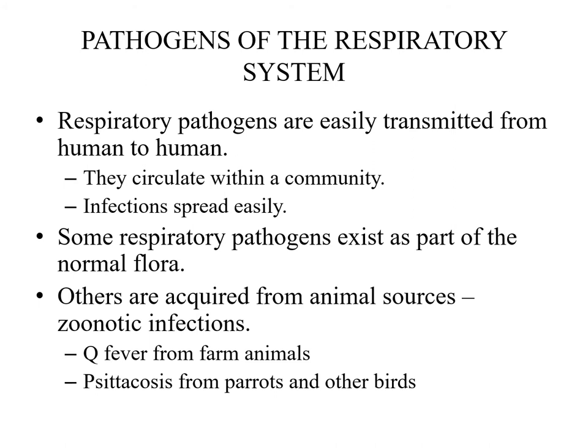Respiratory pathogens are easily transmitted from human to human; they circulate within a community and infection spreads rapidly. For example, COVID-19 is a virus causing upper and lower respiratory tract infection, especially in immunocompromised, elderly, and those with chronic illnesses. It circulates within a community and infections spread easily, especially with new variants that emerge periodically.